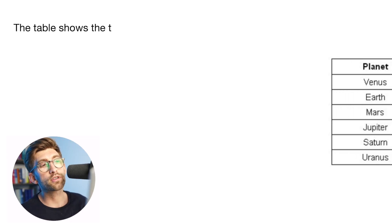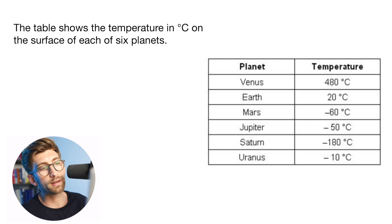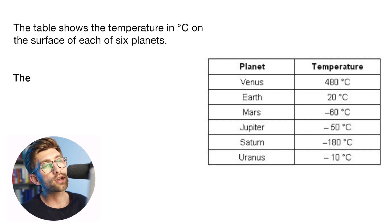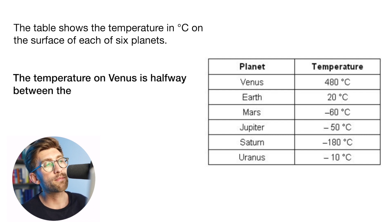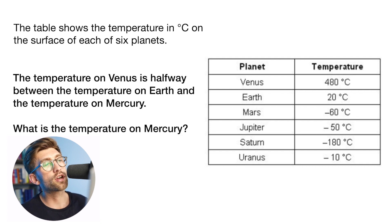The table shows the temperature in degrees Celsius on the surface of each of six planets. And the question states, the temperature on Venus is halfway between the temperature of Earth and the temperature on Mercury. What is the temperature on Mercury?